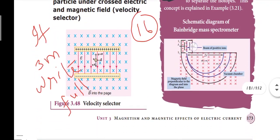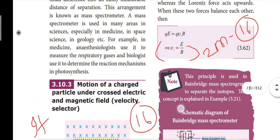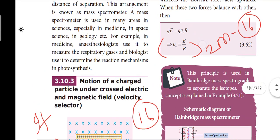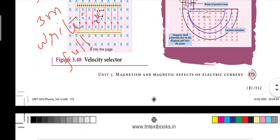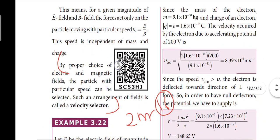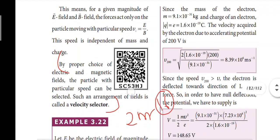For the velocity selector — a two-mark question: by proper choice of electric field and magnetic field, the particle with a particular speed can be selected. Such an arrangement of fields is called a velocity selector.